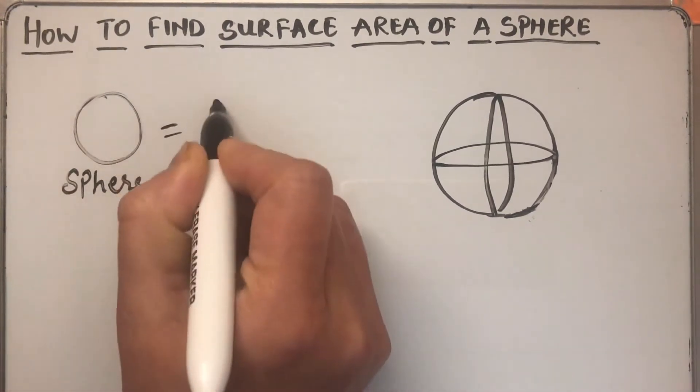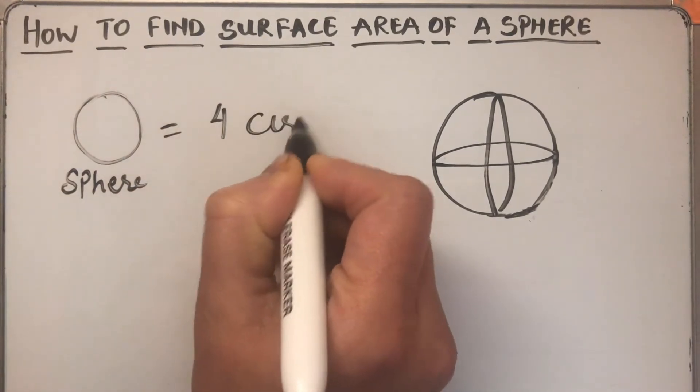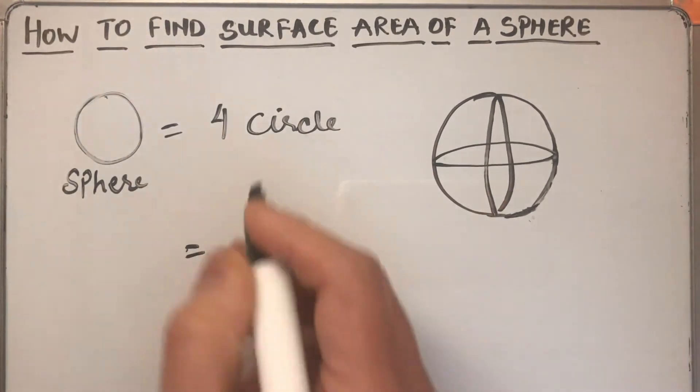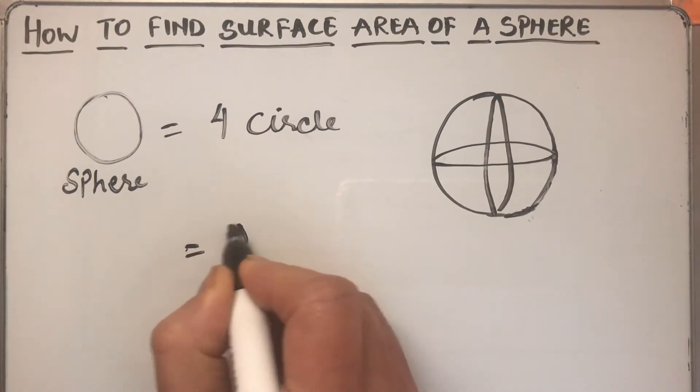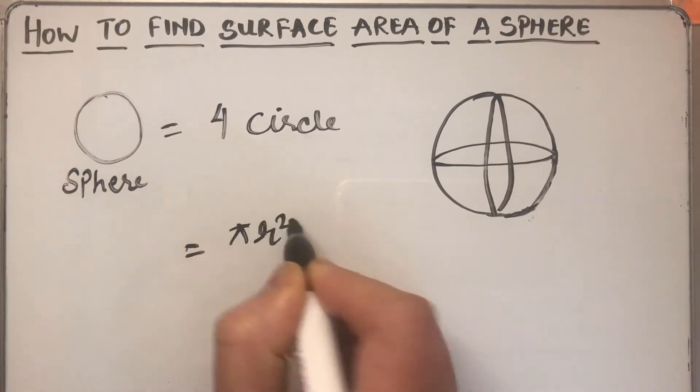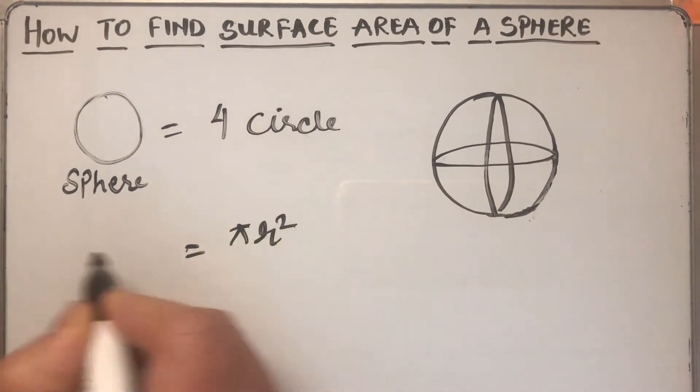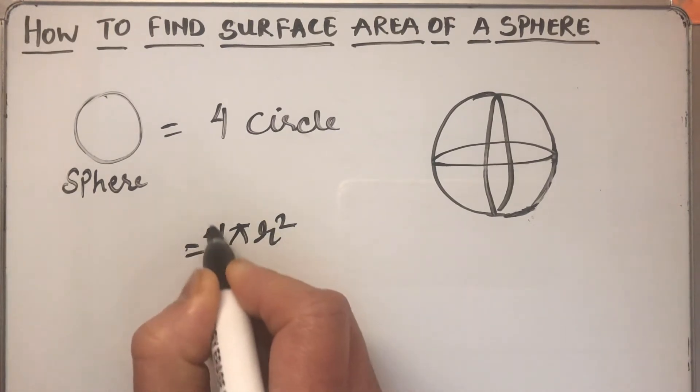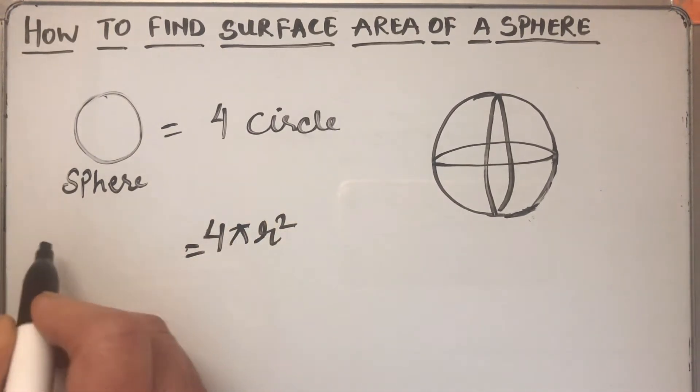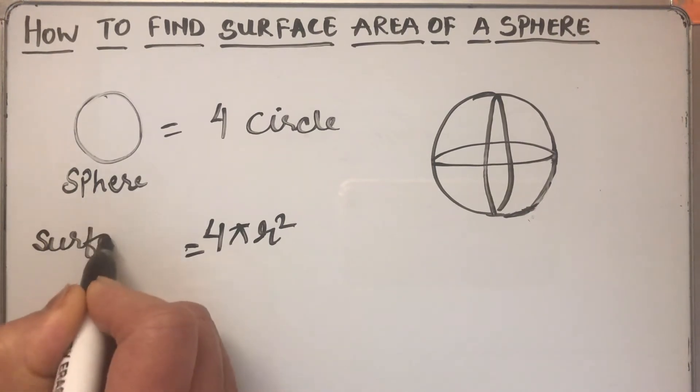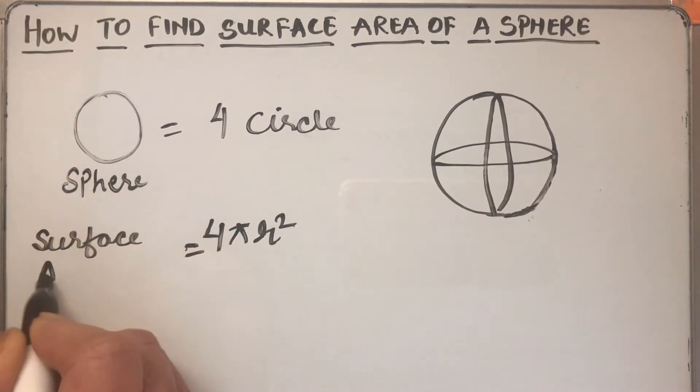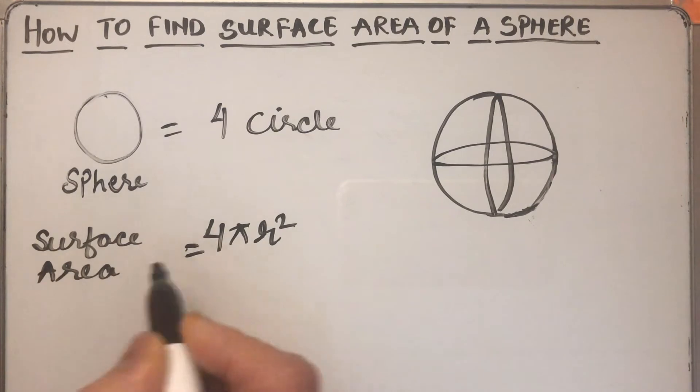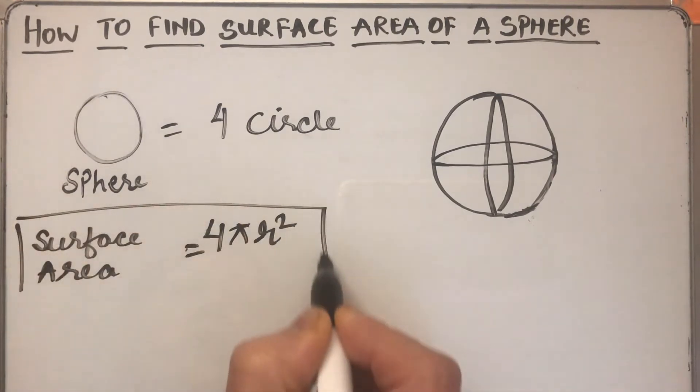We can say that a sphere is equal to four circles. The area of one circle is πr², so the area of a sphere will be four times πr². Therefore, the surface area of a sphere is equal to 4πr².